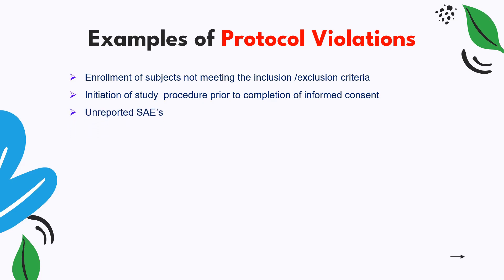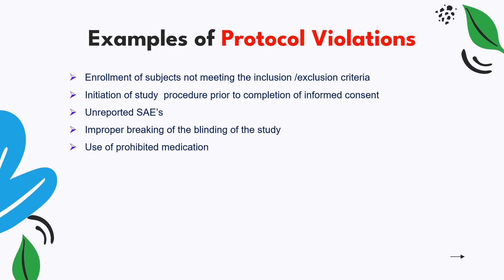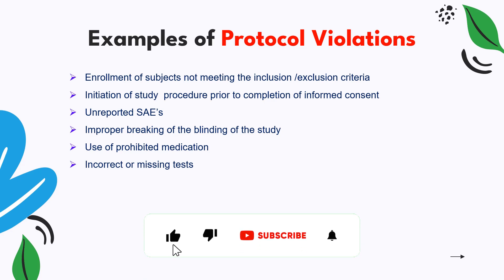If an SAE occurs at a site and the site is aware of it but has not reported it — hiding it — that is a protocol violation. Improper breaking of the study blinding without informing anyone or following proper procedure is also a protocol violation. If a subject uses any prohibited medication listed under the exclusion criteria, that is a major protocol violation. If a subject entirely misses a required test — for example, a urine pregnancy test not done at screening — and the subject is later found to be pregnant, that is a major protocol violation.